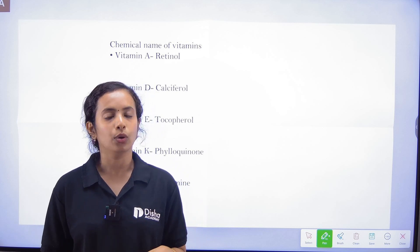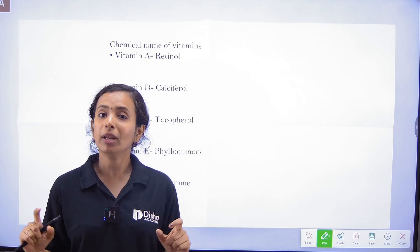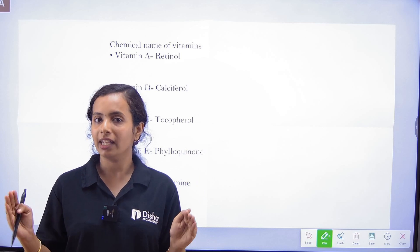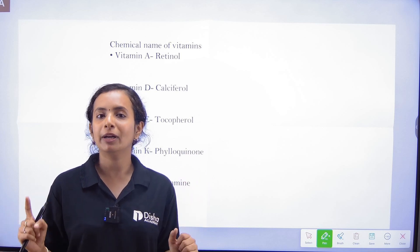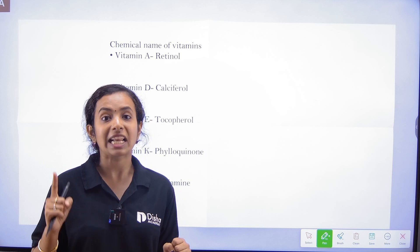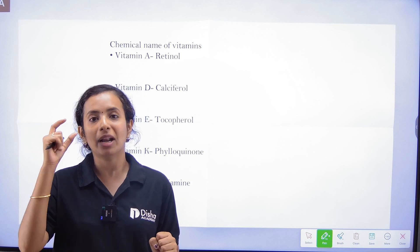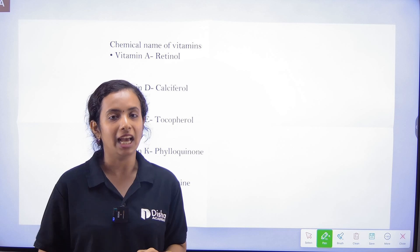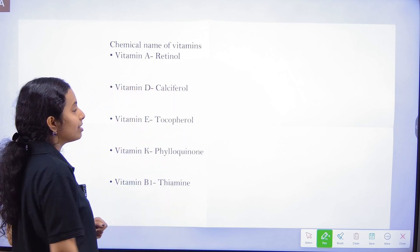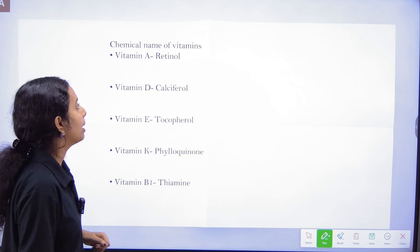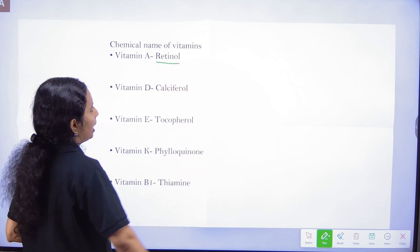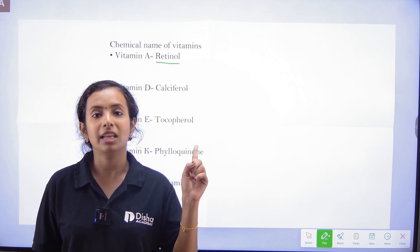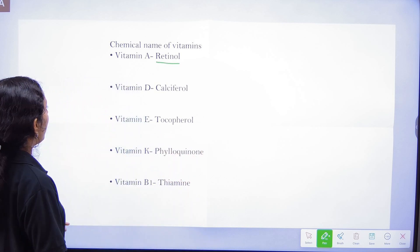Vitamin A's chemical name is Retinol. Moving on, Vitamin D — its chemical name is Calciferol. Vitamin D is associated with calcium in our body.